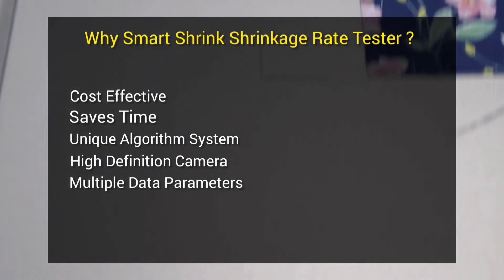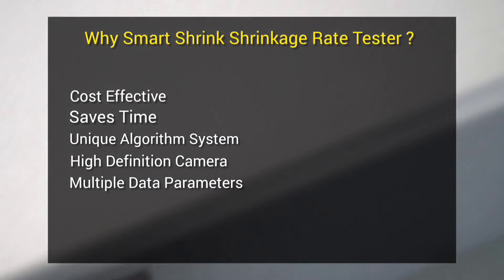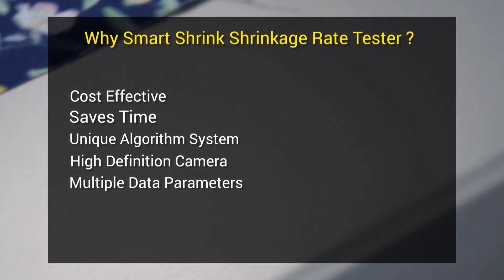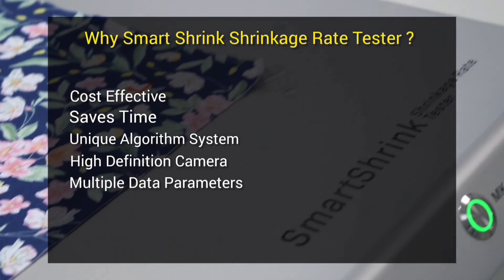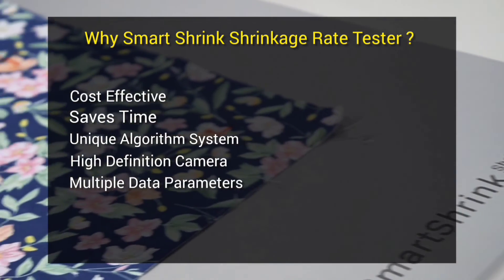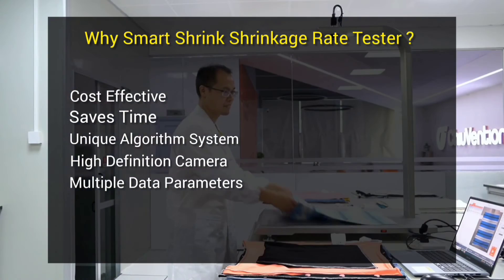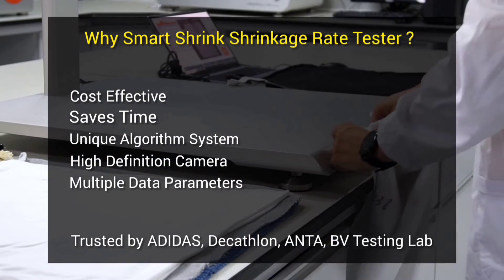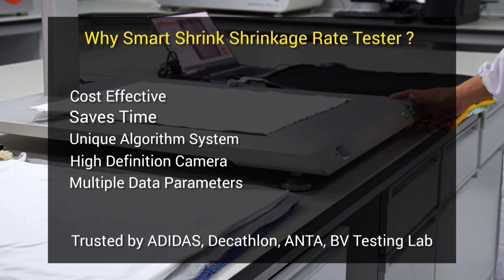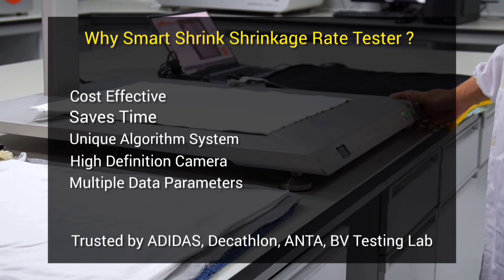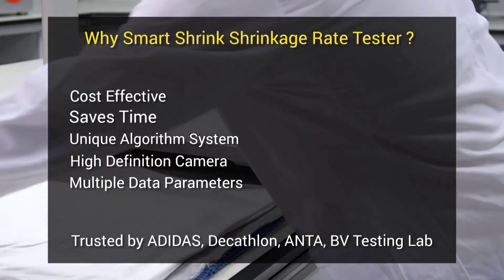Next is multiple data parameters — the equipment can test warp and weft shrinkage, seam twist rate, vertical twist rate, and diagonal twist rate. This equipment is used by many famous brands and testing labs such as Adidas, Decathlon, ANTA, and BV Testing Lab, among others.